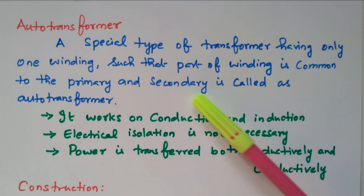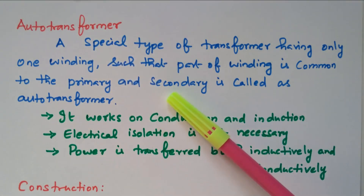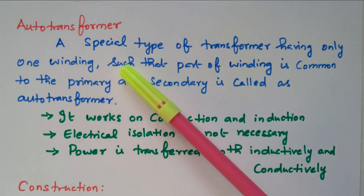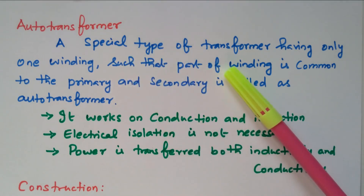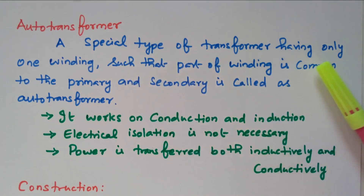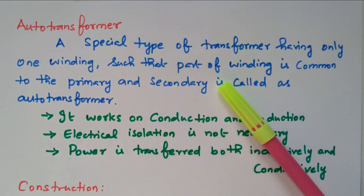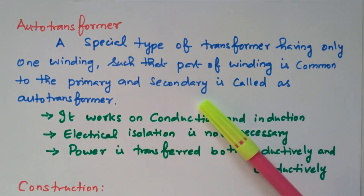Now we will go to the topic auto transformer — the construction and working principle. The auto transformer is a special type of transformer having only one winding, such that part of the winding is common to primary as well as secondary.